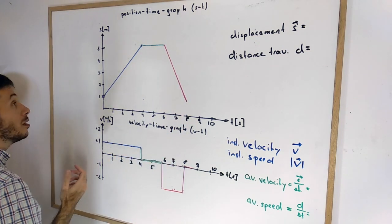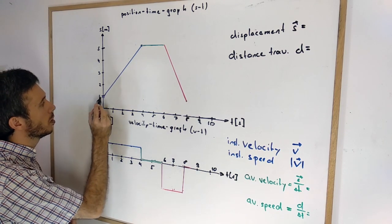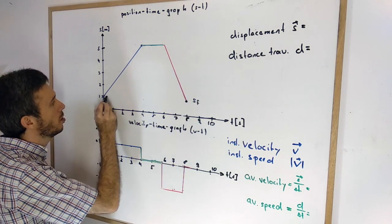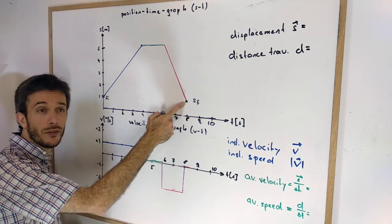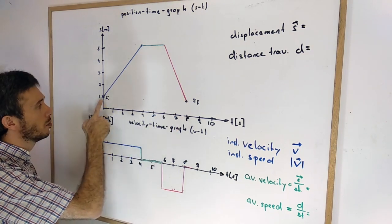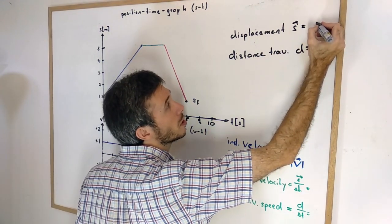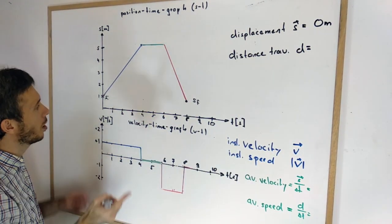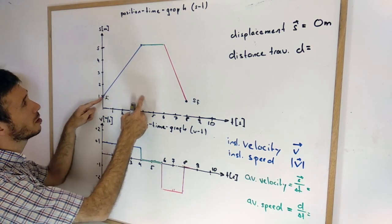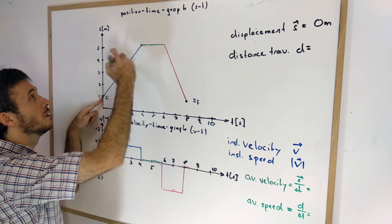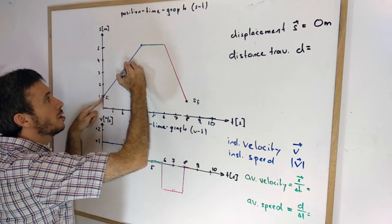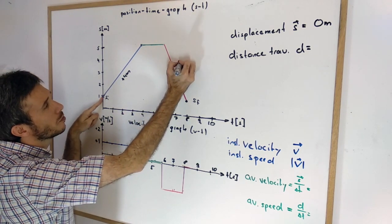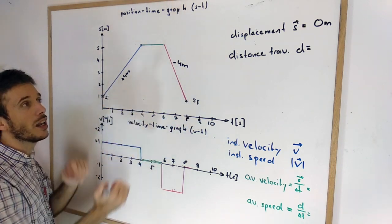So what is the total displacement? The total displacement is the final position minus the initial position. We arrive back at 1 meter, so the total displacement in this case was 0 meters. Note that displacement is a vector — from 0 to 4 seconds the displacement was plus 4 meters, while from 6 to 8 seconds we had a displacement of minus 4 meters, meaning it had a sign.